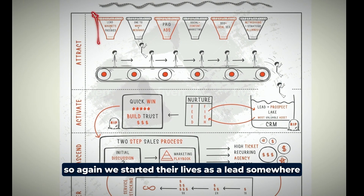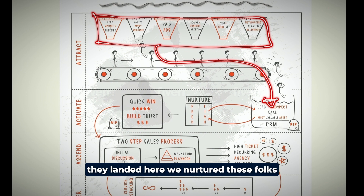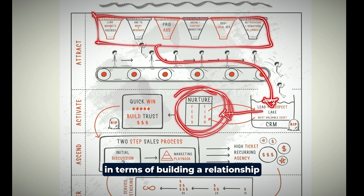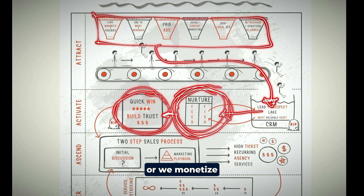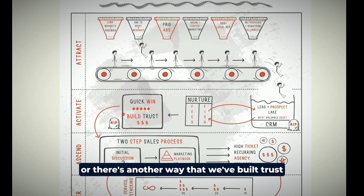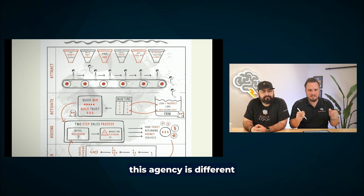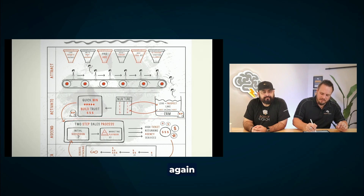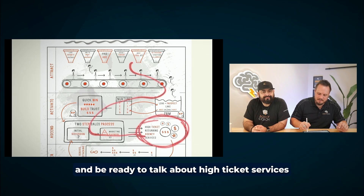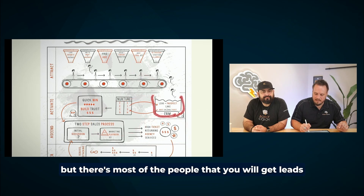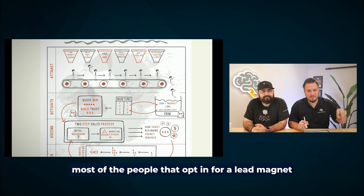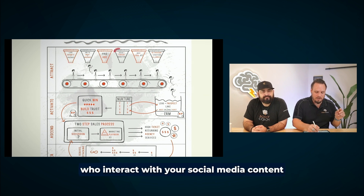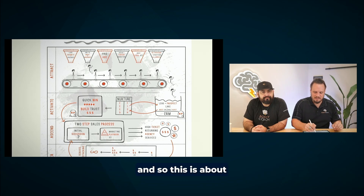So to recap: their lives start as a lead somewhere, they come into our lake, we nurture those folks by building a relationship and making them offers, and then we activate them — either with a quick win service where we monetize the relationship, or we build trust in another way so they can say, 'This agency is different, these guys know what they're talking about, they care about me, and I'm ready to talk.' Yes, there are folks who will move through this really fast and be ready for high-ticket services — but most people you get as leads, meet at networking groups, or who opt in for a lead magnet are not ready, and this machine is how we warm them up and get them into that process.